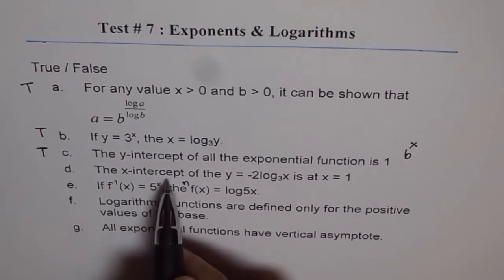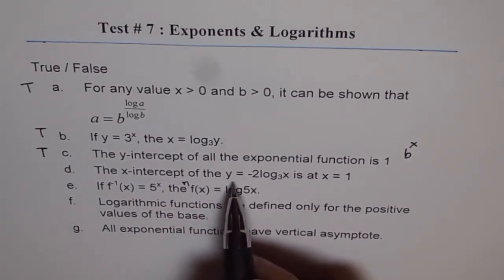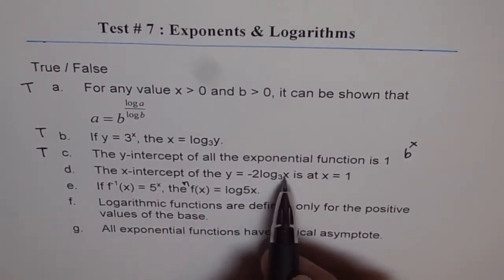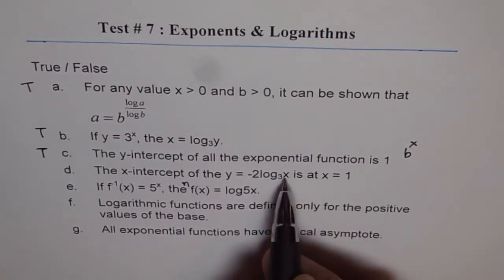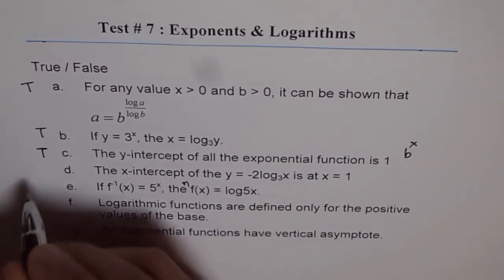The x-intercept of y equals minus 2 log 3x is at x equals 1. Let's plug in x as 1 here. So log of 1 is 0, correct? And so you get 0. That's true.